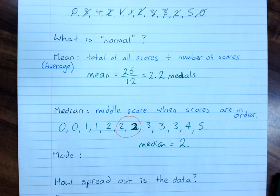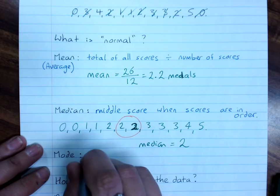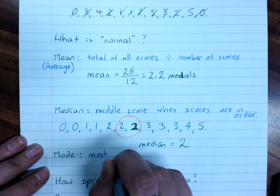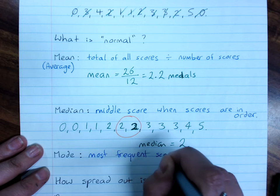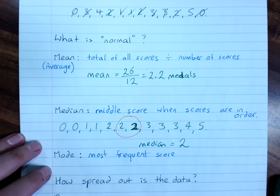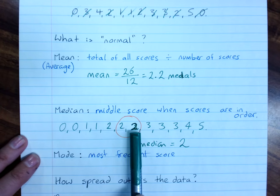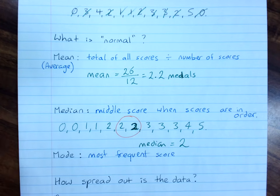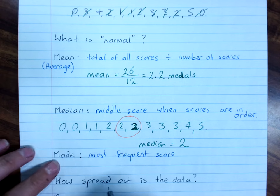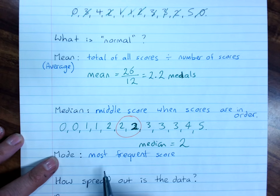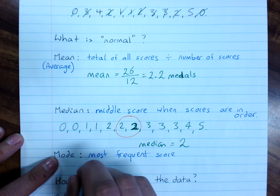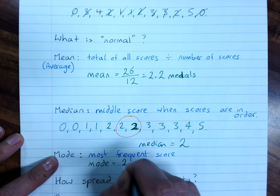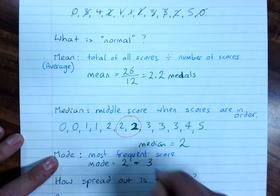The mode is the most frequent score, the score that happens most often. Now three people got two and three people got three. So this means my data is bimodal. That means there's two modes. And the mode is two and three.